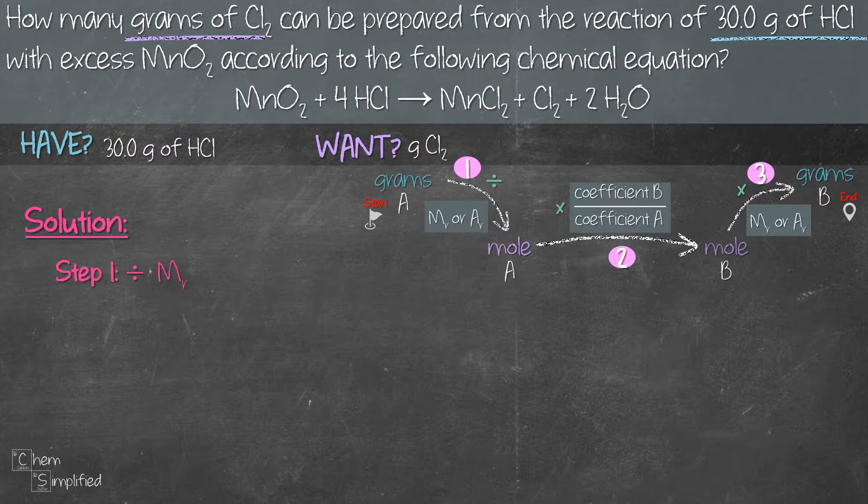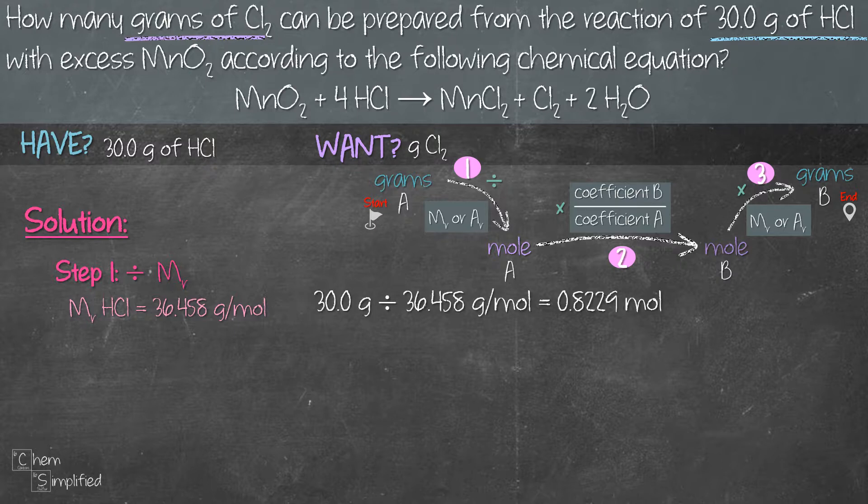Step 1 is to divide the given mass, which is 30 grams, with the molar mass of A. A is HCl, so that comes out to be 36.458 grams per mole. So if you need a refresher on calculating molar mass, I'll link the video up top. So we take 30 grams, divide with 36.458 grams per mole, and we get 0.8229 mole. What we have just calculated is mole A, which is mole of HCl.